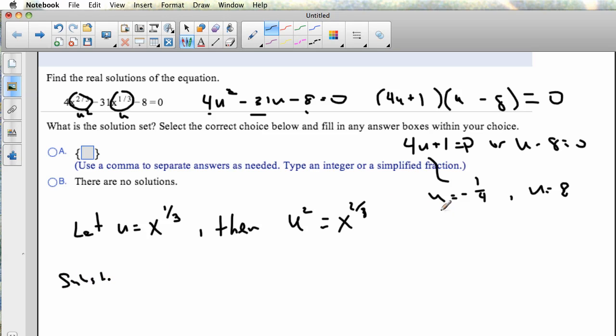So instead of u being equal to negative 1 fourth, it should be x to the 1 third equals negative 1 fourth. And instead of u equals 8, it's the same thing as saying x to the 1 third equals 8. So I'm going back and replacing the u with x to the 1 third in these equations.